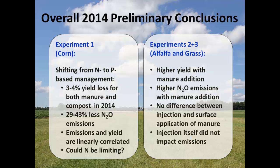Overall conclusions across all three studies: shifting from N-based to P-based management results in 3% yield loss and 29–43% less nitrous oxide emissions, with emissions and yield being linearly correlated. For experiments two and three — alfalfa and grass — we saw higher yield and higher emissions with manure application. But we did not see any differences between injection and surface application for yield production, and injection itself did not impact emissions.